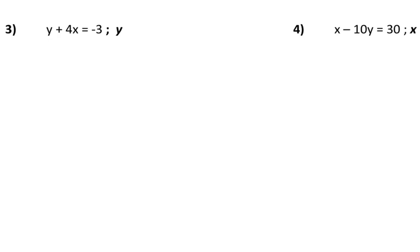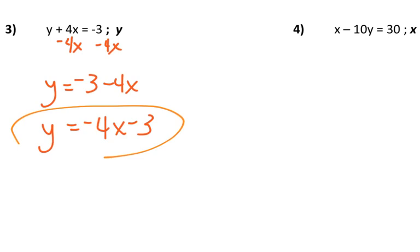Number three, we're solving for y. So I'm going to subtract 4x. So y equals negative 3 minus 4x, or you could say y equals negative 4x minus 3. Later on, we'll see that this is what we call standard form, and so that's generally how I write it. But for what we're doing right now, it doesn't really matter.